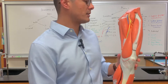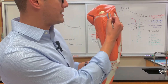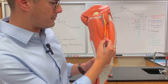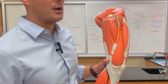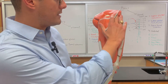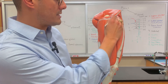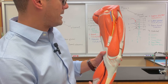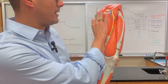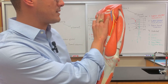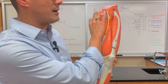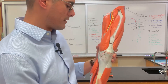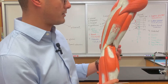Bringing it a little closer to the camera, you can see the femoral nerve, which is listed as number 84, coming all the way down through here. Now we want to first identify all the nerves on the leg model before discussing other innervations.